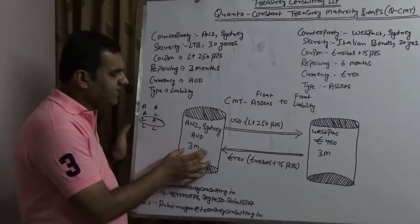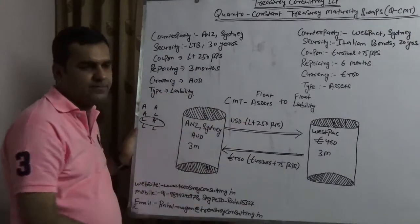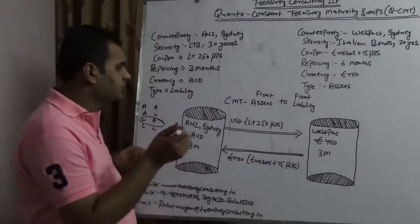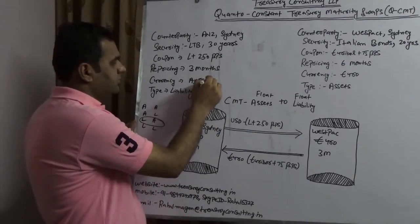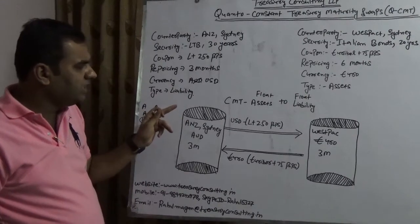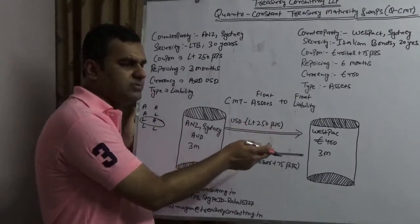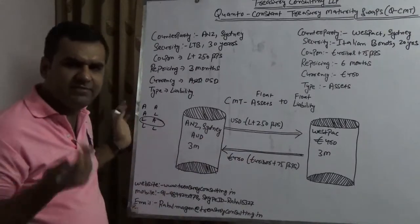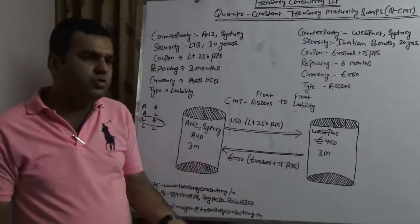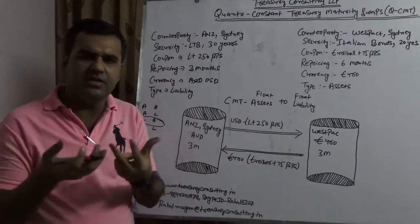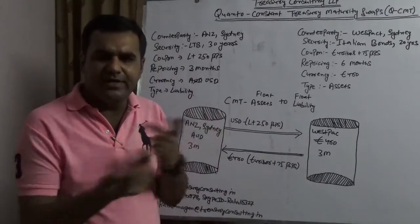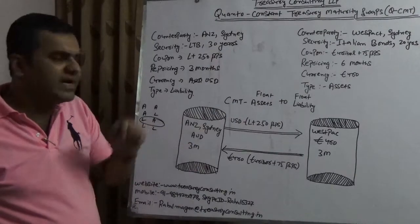Now, when the ANZ Sydney person will interact with Westpac, he believes that the payment which he is doing, which is Australian dollar or take it as a dollar - because Australian dollar is not in LIBOR - he believes that the payment which he is doing in dollar terms, which is L plus 250 points, this would rise because he thinks that Federal Reserve would rise the rates. On the other hand, Westpac thinks that the Euribor will rise because of the French election and the ECB, and there is no disintegration which would happen in the European Union. So they wanted to swap their liability.